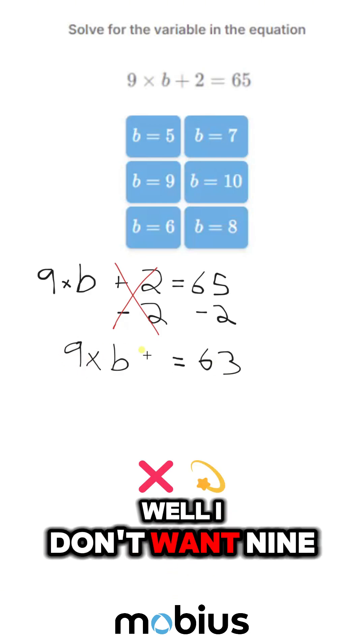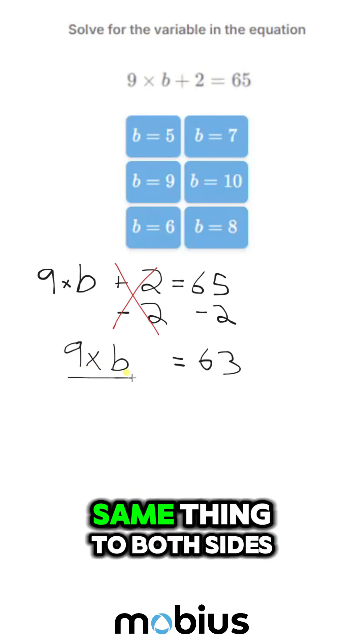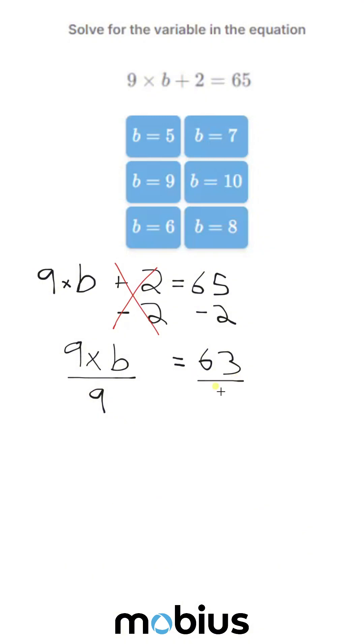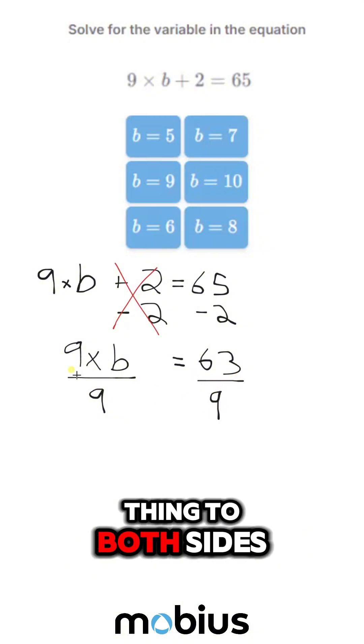Well, I don't want 9 times b. I want b. So we can do the same thing to both sides. I'm going to divide by 9. Definitely do the same thing to both sides.